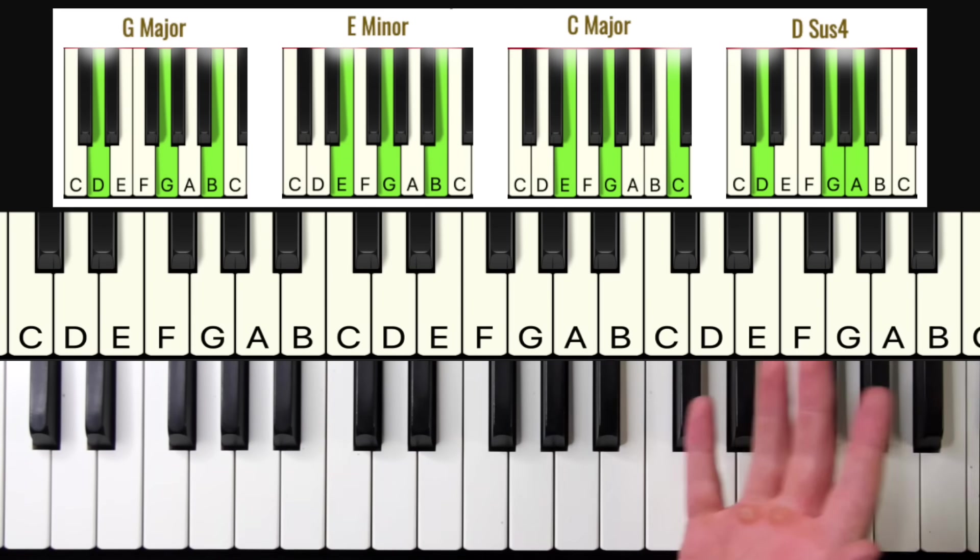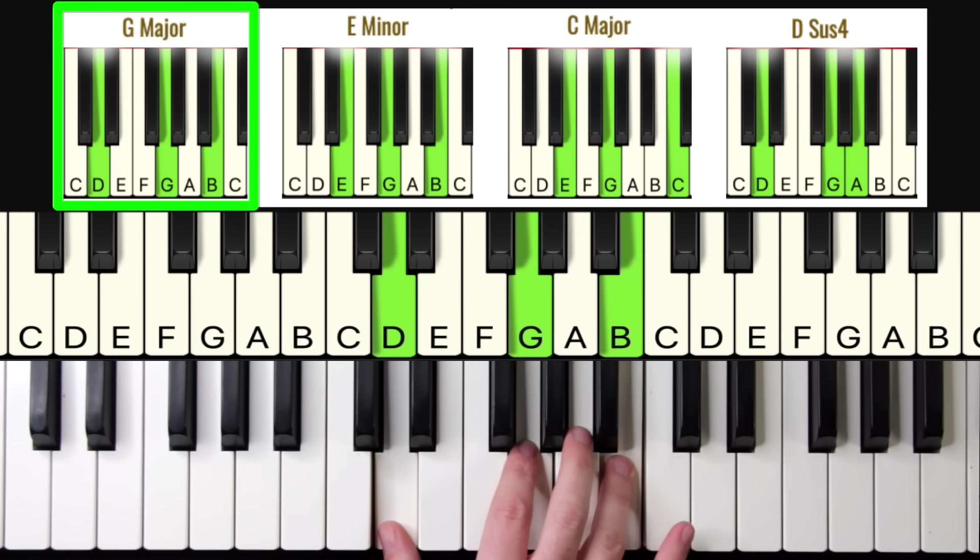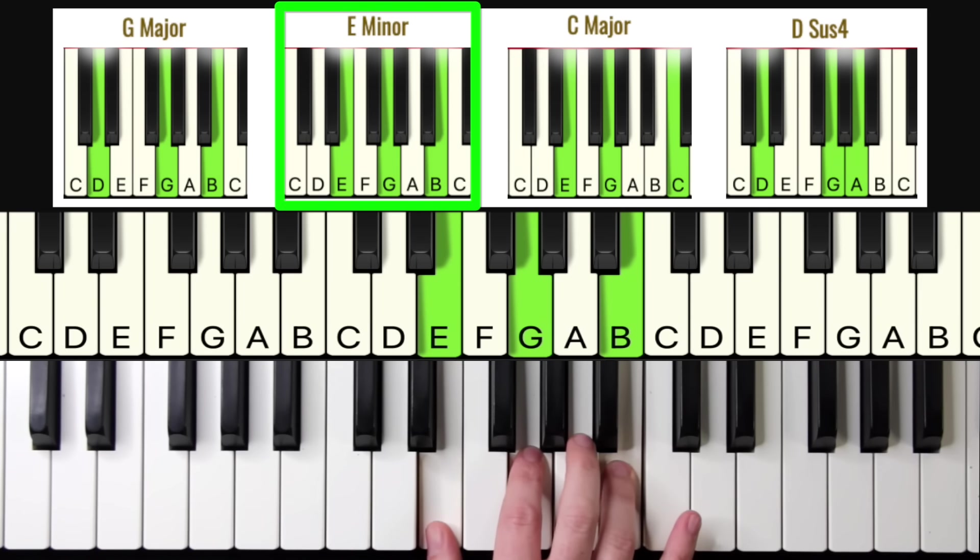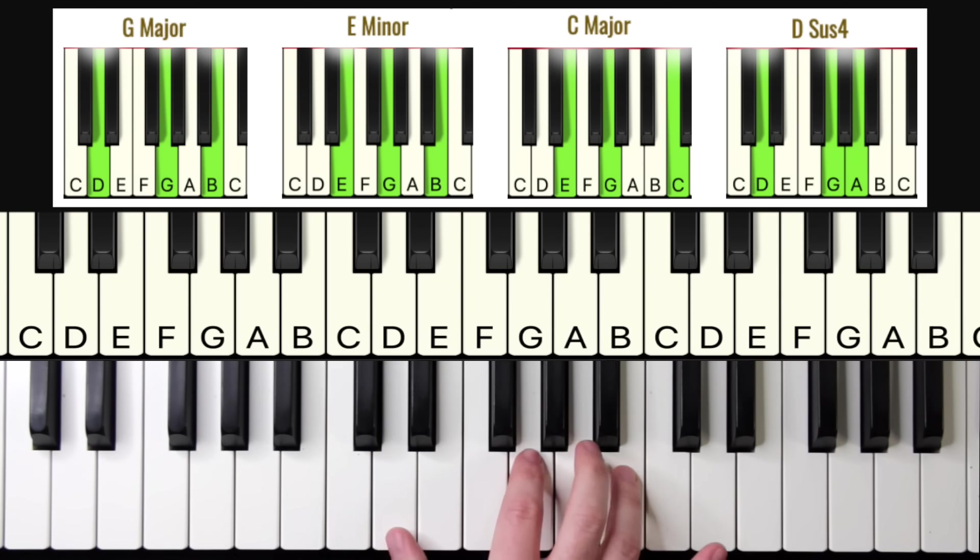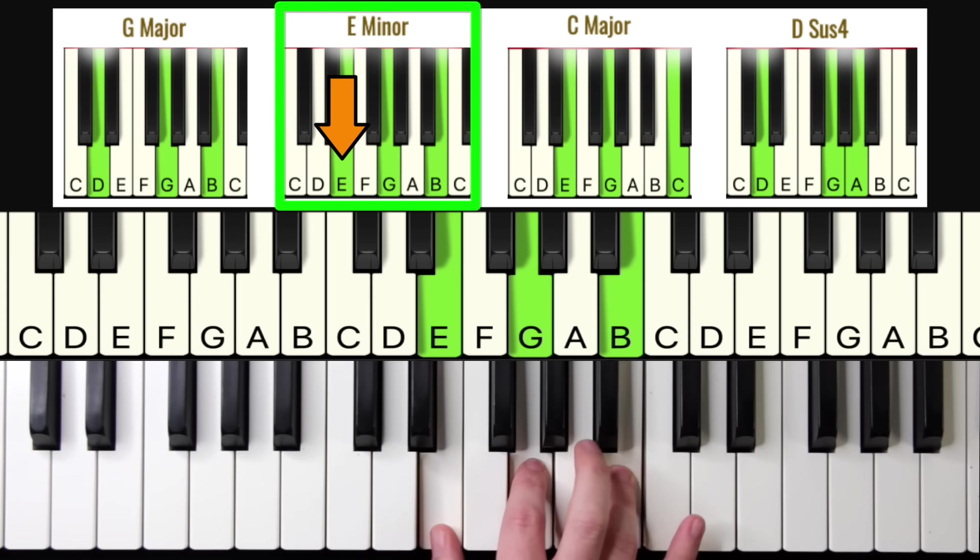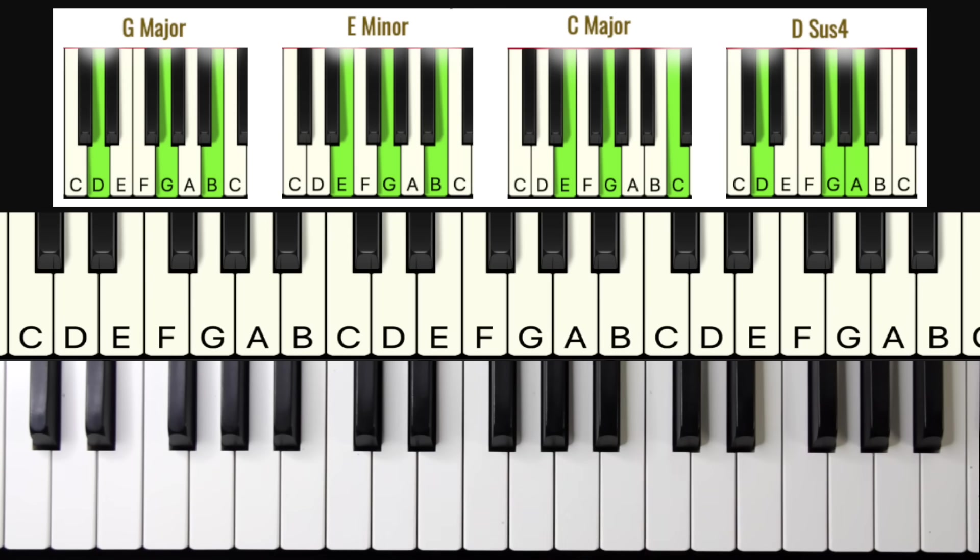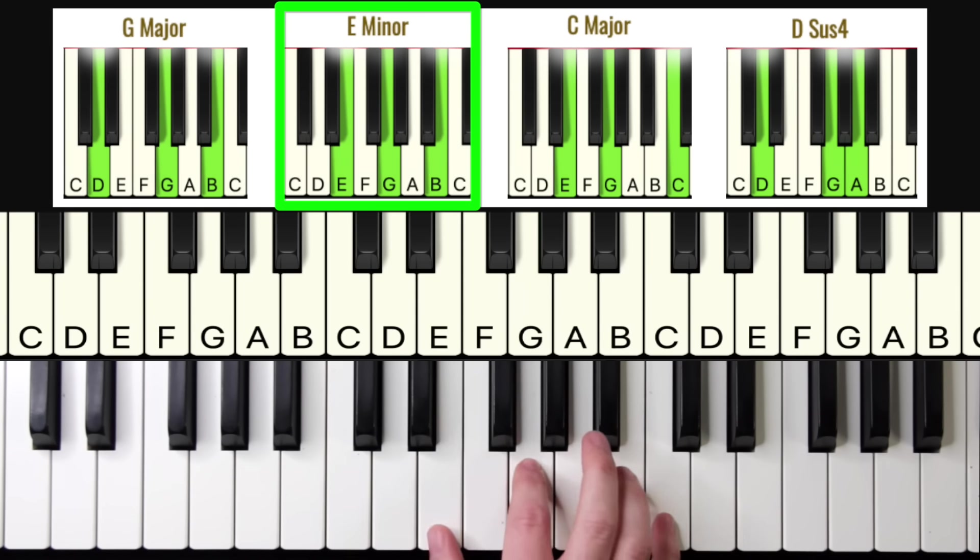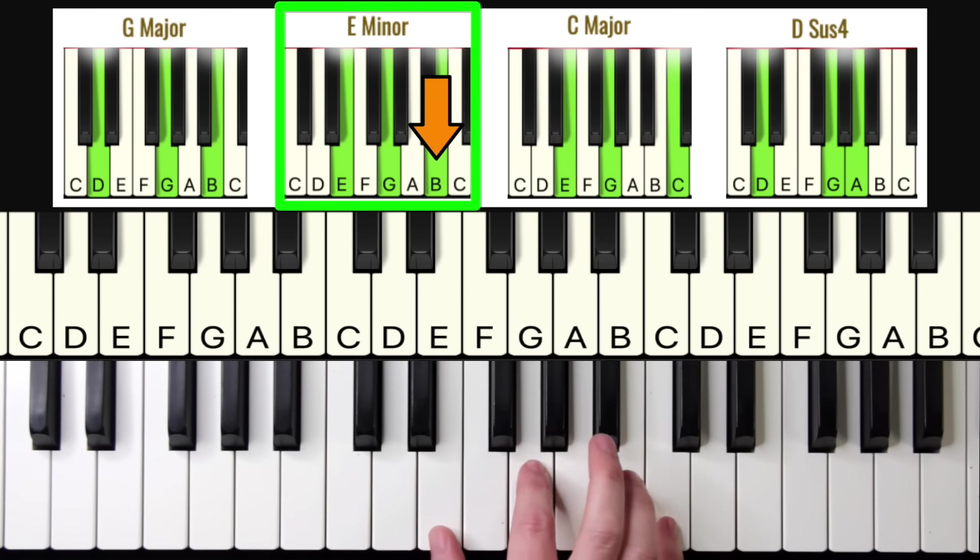Now, the big secret to learning these four chords faster is to focus on something called common notes. So if you'll notice, when we go from G major to E minor, these top two notes stay exactly the same. All we're doing is moving our thumb from the D up to the E.